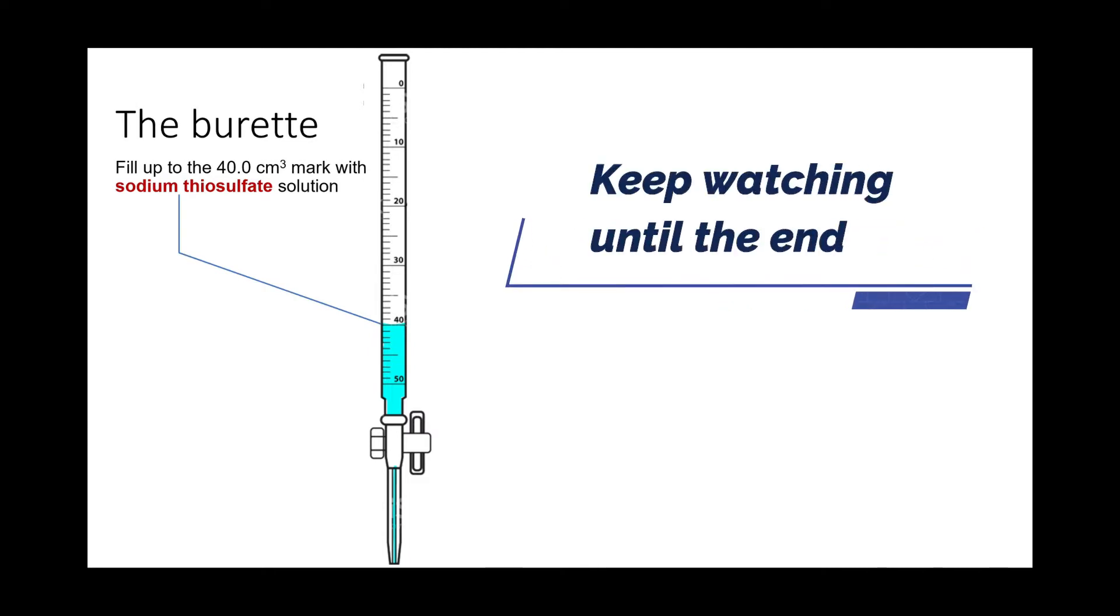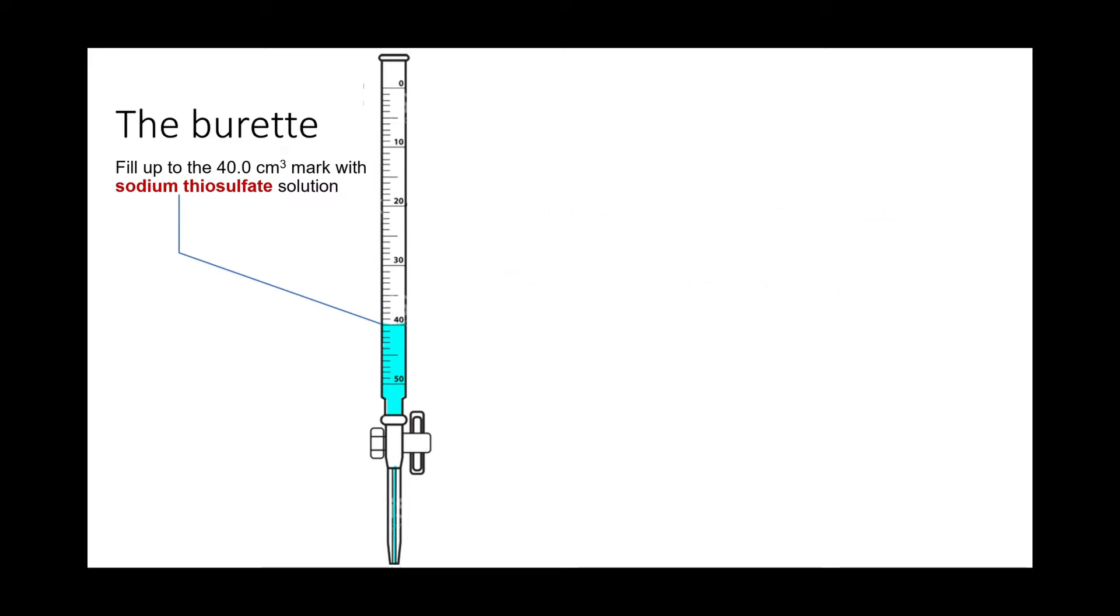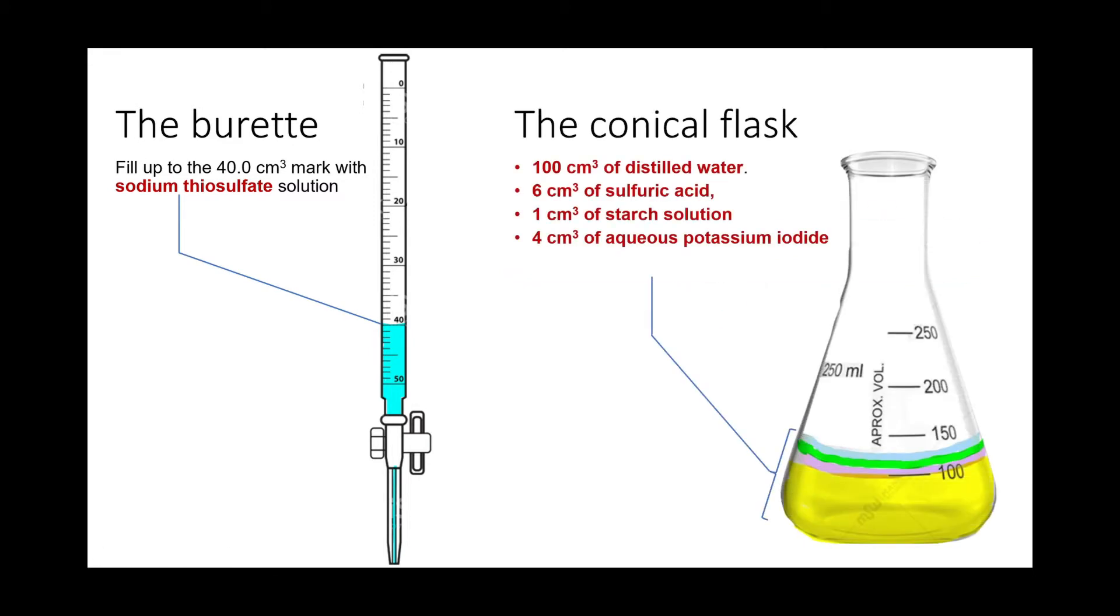So, we fill up the burette to the 40 cm³ mark with sodium thiosulfate solution, and then we prepare a conical flask and fill it up with the following solutions. The next solution we add is 1 ml of sodium thiosulfate from the burette, and then swirl to mix. Now, we are ready to mix in the hydrogen peroxide and start the timer. Once the timer starts, you cannot stop.